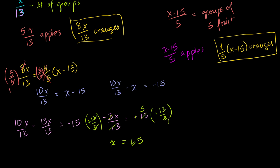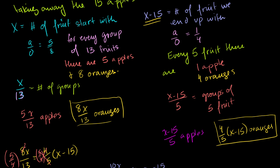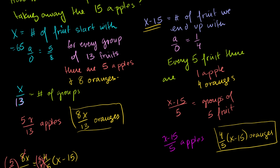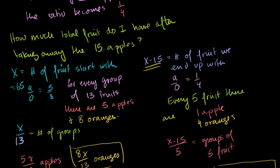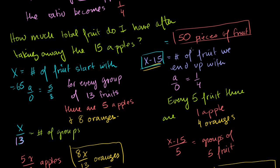But that is not our answer. Remember, x was the number of fruit we started with, and we found that equals 65. But the question asked how much total fruit do I have after taking away the 15 apples. If I started with 65 and give away 15 apples, I'm left with 65 minus 15, which equals 50 pieces of fruit. That's what they're asking for — total fruit, not the number of apples, after taking away the 15 apples.